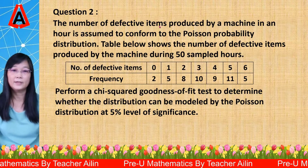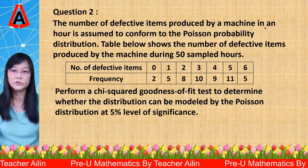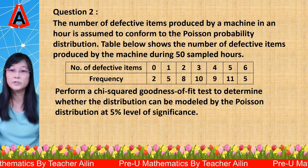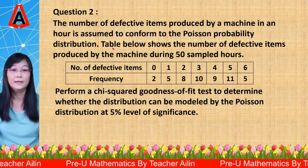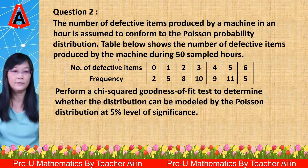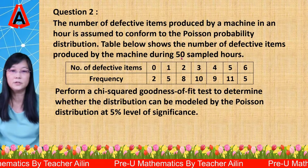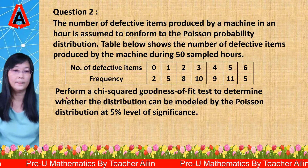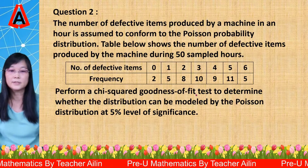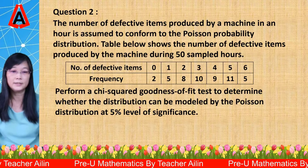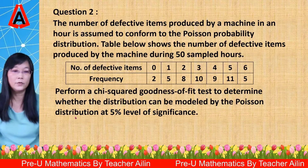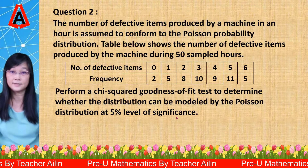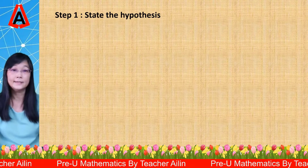The number of defective items produced by a machine in an hour is assumed to conform to the Poisson probability distribution. The table below shows the number of defective items produced by the machine during 50 sampled hours. Perform a chi-square goodness of fit test to determine whether the distribution can be modeled by the Poisson distribution at a 5% level of significance. Now, the first step: set the hypothesis.